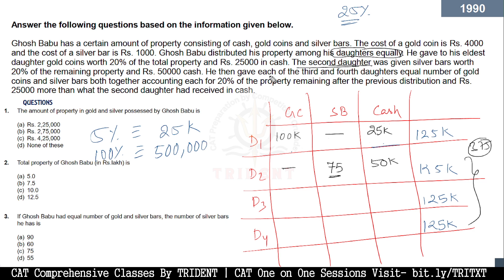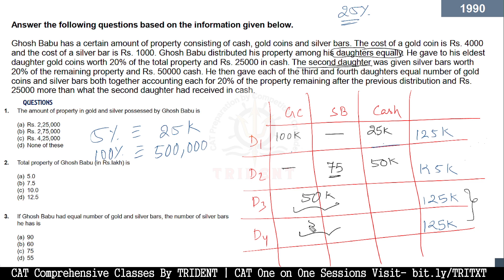The third and fourth daughters each receive equal numbers of gold coins and silver bars. After the first two daughters, 250k has been distributed and 250k remains. 20% of the remaining 250k is 50k, so each of the third and fourth daughters receives 50k worth of gold coins and silver bars — in some ratio — plus cash. The cash each receives is 25,000 more than the second daughter's cash of 50k, so that's 75k. This confirms: 50k in gold/silver plus 75k in cash equals 125k each.